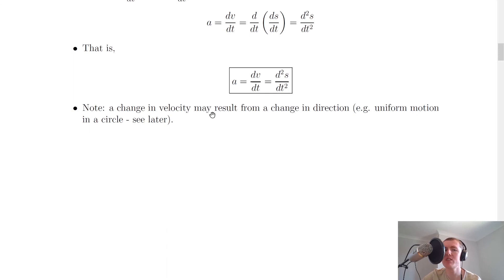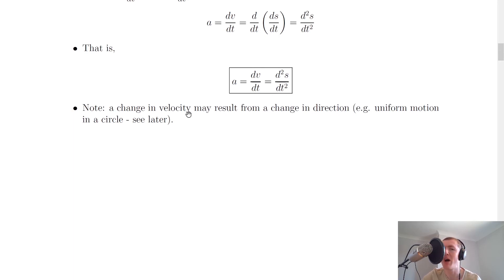The last thing to note is that a change in velocity may result from a change in direction. For example, if an object is traveling with a constant speed it can still have a changing velocity if it's also changing direction, because velocity is a vector quantity — it has a magnitude and a direction. So if the magnitude stays the same but the direction changes, then the velocity must change overall. We'll see this later in the topic on uniform motion in a circle.